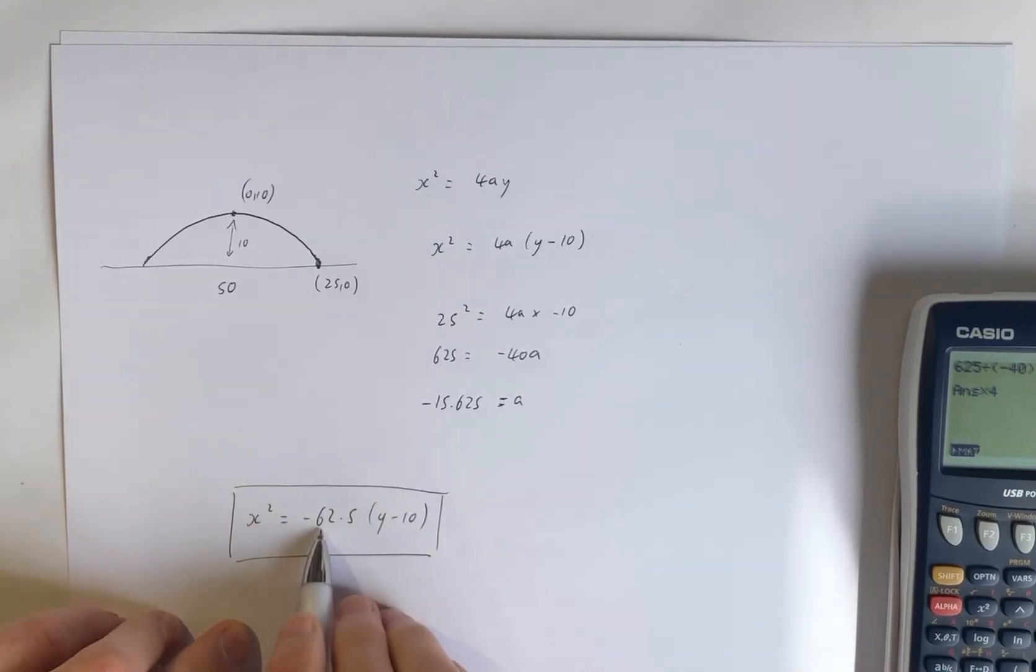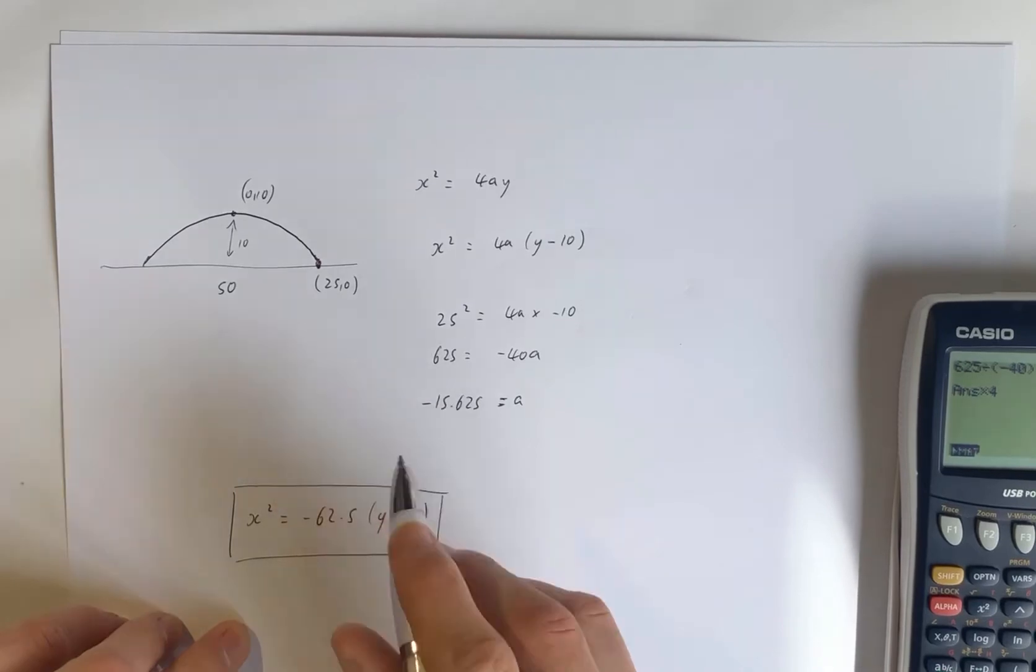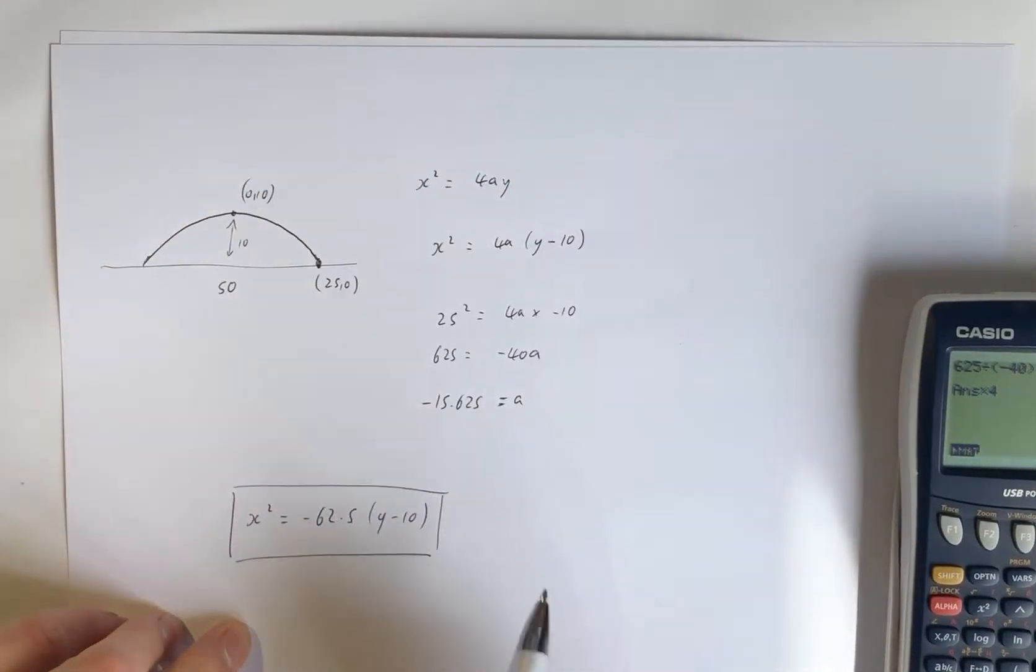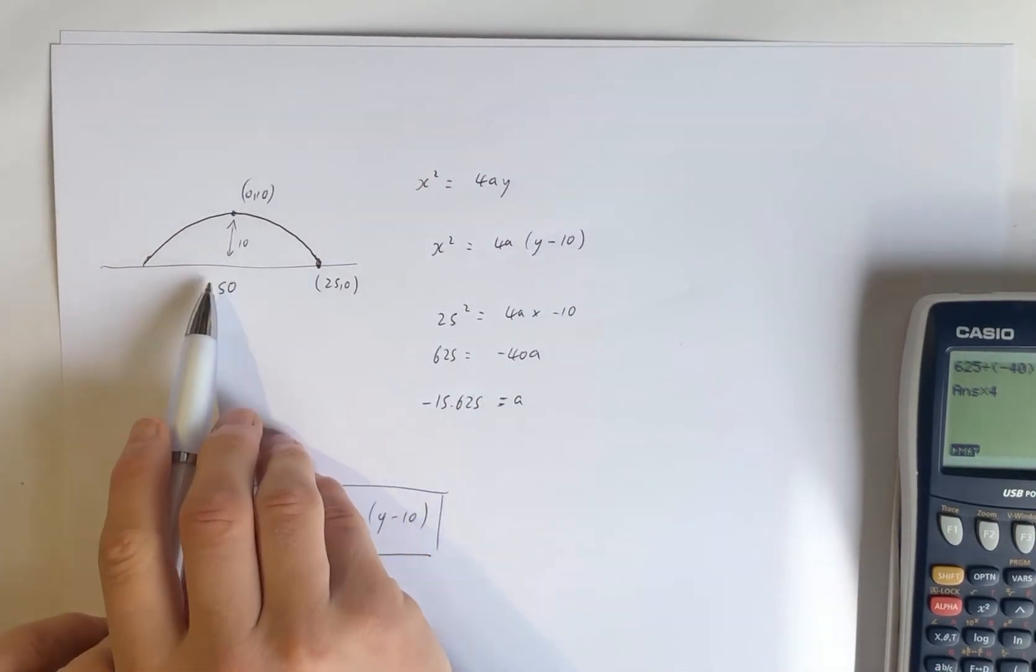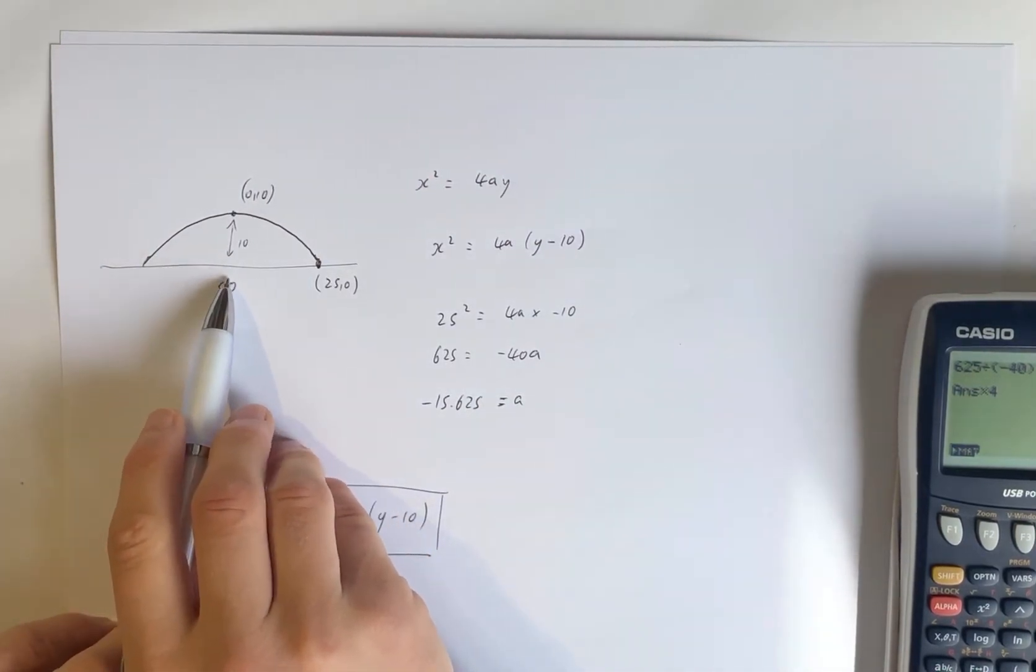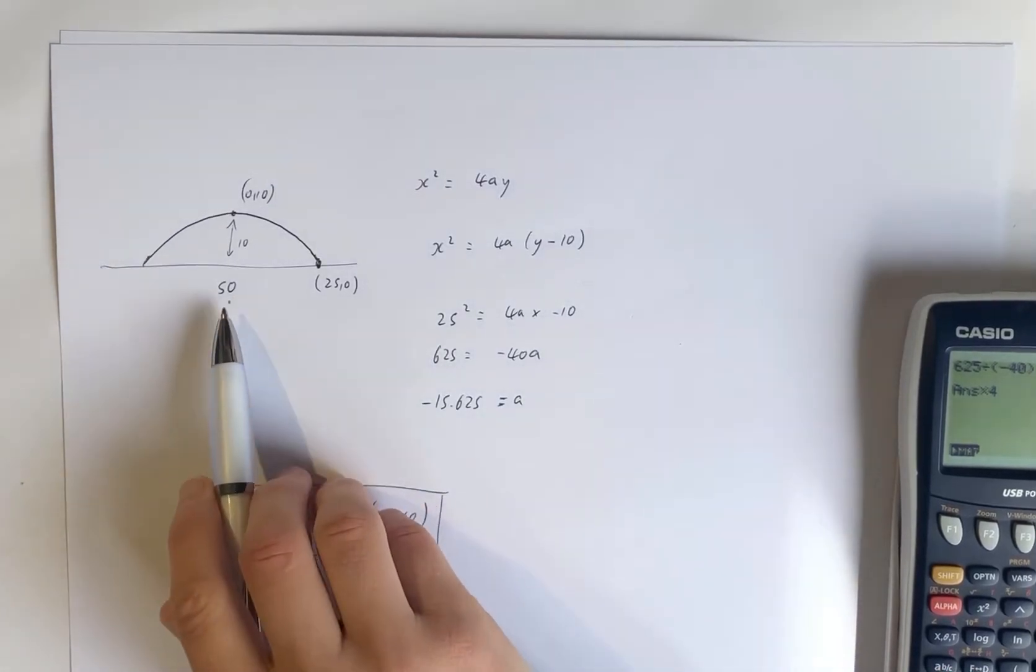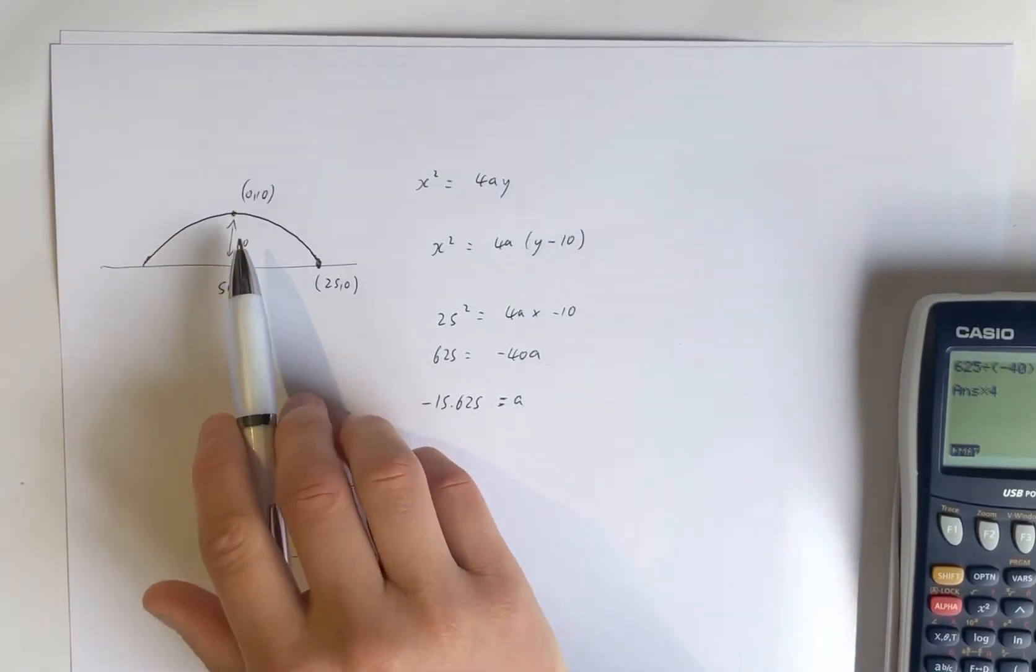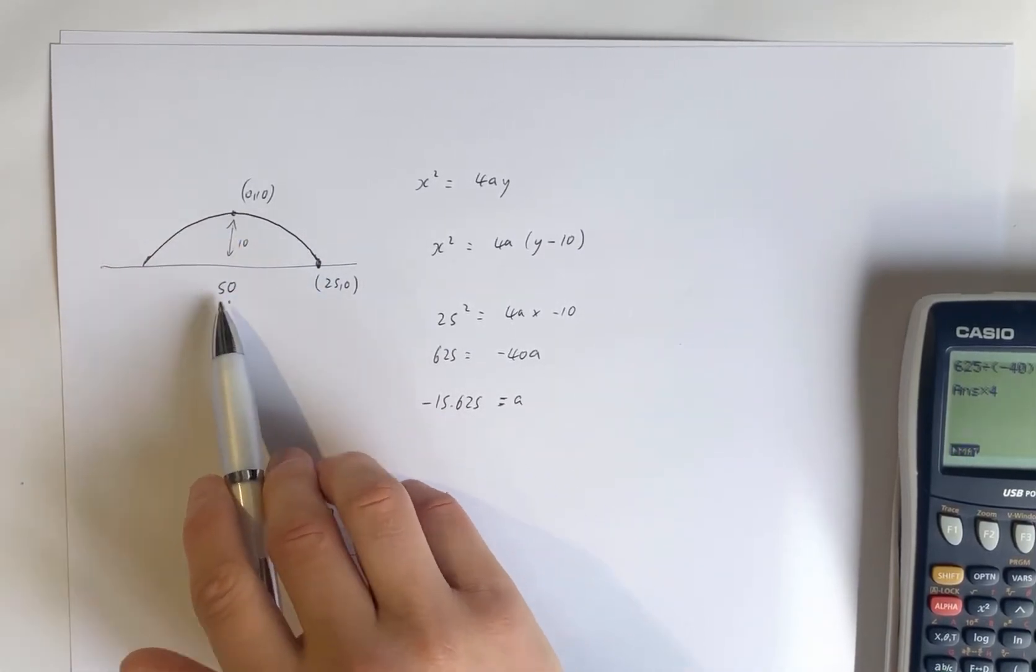Now, the focal point, remember, is A. So it's negative or it's 15.625 down in the direction of this graph. So it must be about negative 5.62. So the focal point's actually somewhere under the ground. Which is probably a good thing.